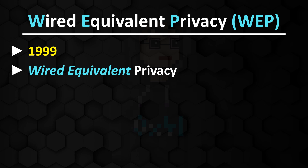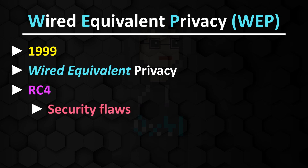Judging by the name, you might get the impression that this is a very secure protocol — it promises to provide as much privacy as a wired connection. The exact opposite is true. WEP uses the RC4 stream cipher to secure data, which is already a problem since RC4 has numerous security flaws, and that's why it's a popular basis for CTF challenges.